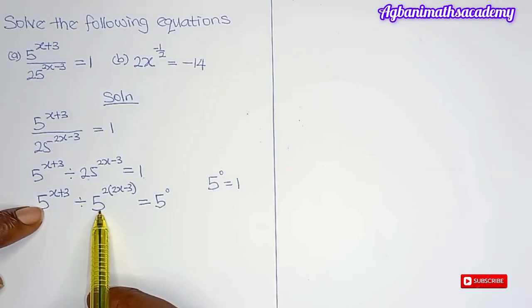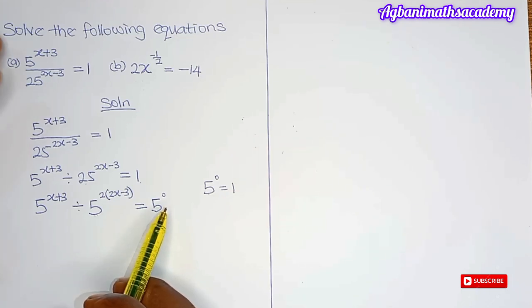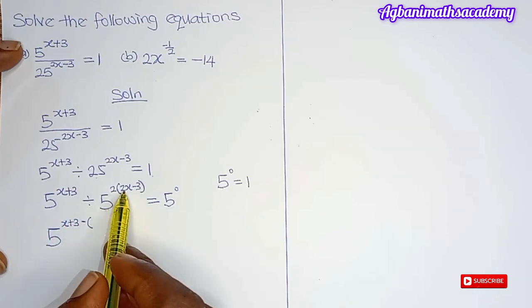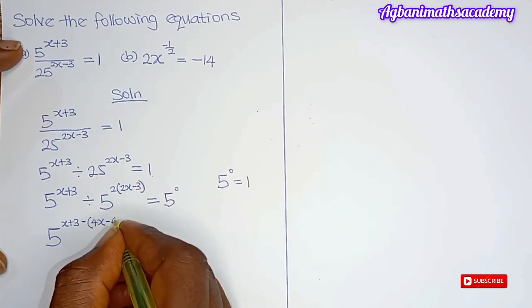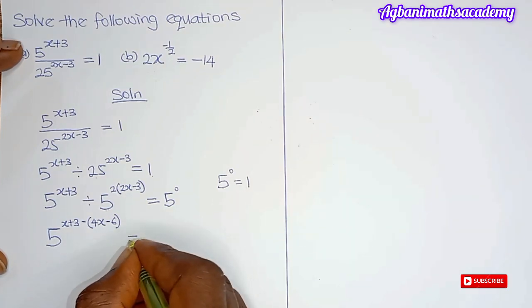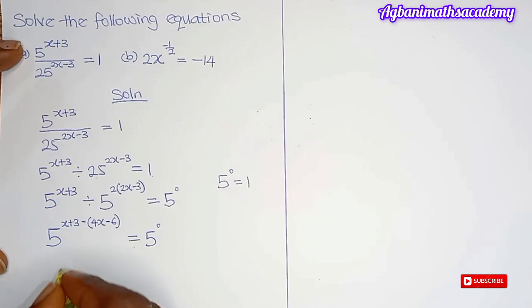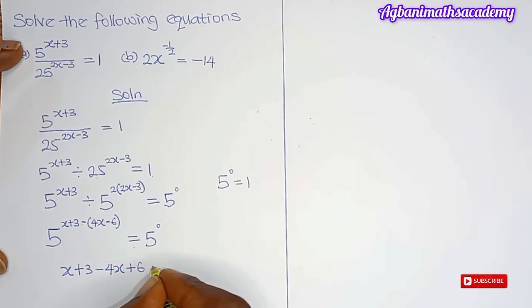Next, we bring the two bases together. The second law of indices states that when dividing two indices with the same base, you subtract the second power from the first. So this gives us 5 to the power of x plus 3, minus 2 multiplied by bracket 2x minus 3. Expanding: 2 times 2x gives 4x, and 2 times minus 3 gives minus 6. So we now have a single base on the left equal to 5 to the power of 0.